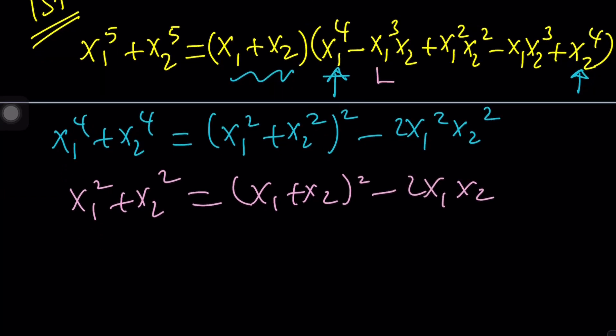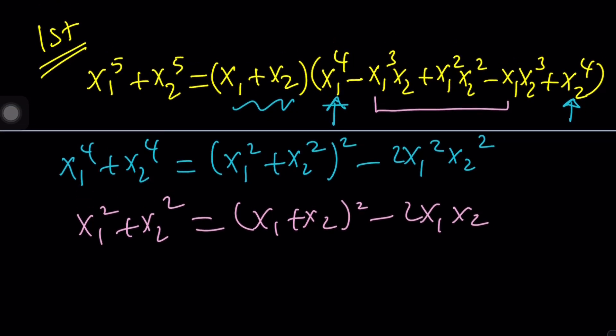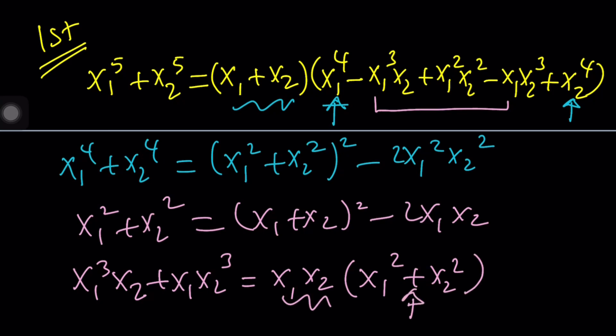And there are two terms in the middle, sort of like center, that can be found because notice that x1 cubed x2 plus x1 x2 cubed, by taking the positive sign, can be factored into x1 x2 multiplied by x1 squared plus x2 squared. Again, we can find this. We already know. And this is the product.